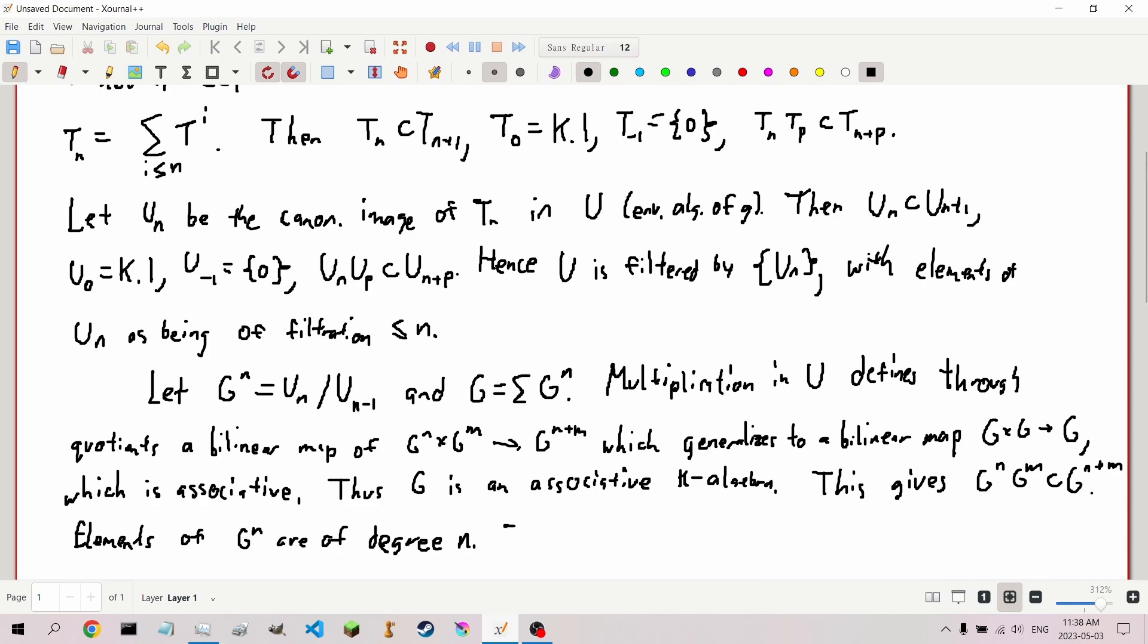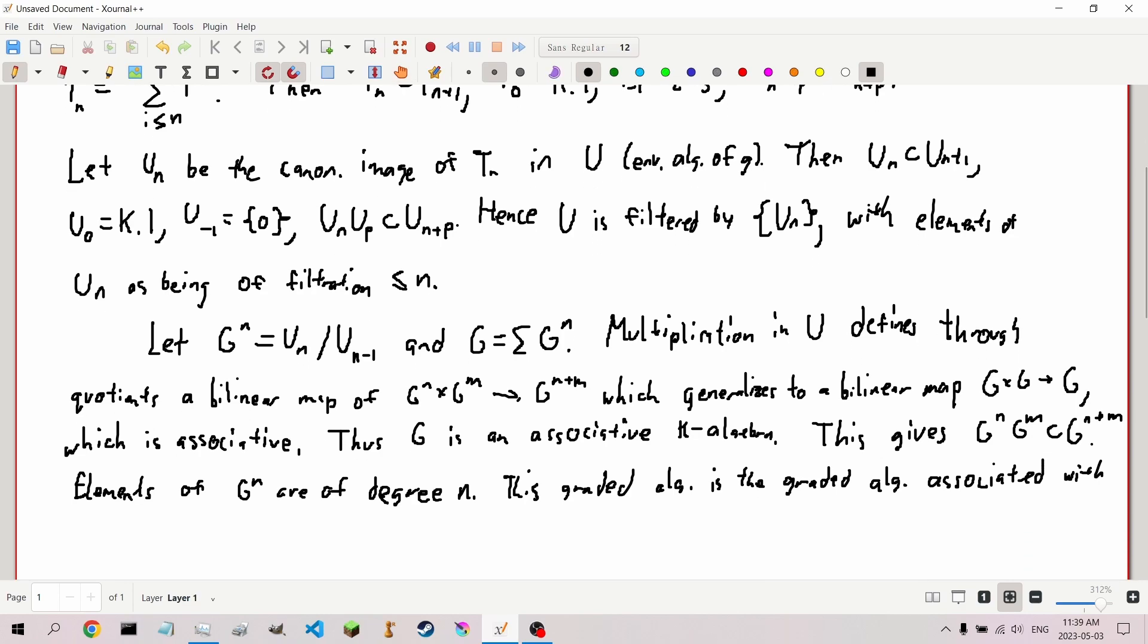This product gives, as we can see, G_n times G_m is inside their sum. Elements of G_n are said to be of degree n, not order. The graded algebra we have just made is the graded algebra associated with the filtered algebra of U.